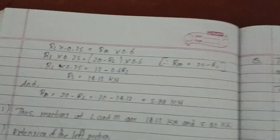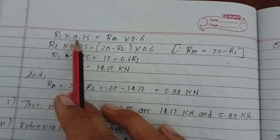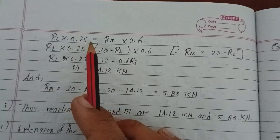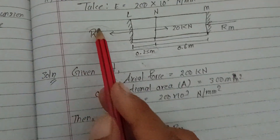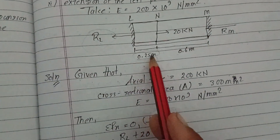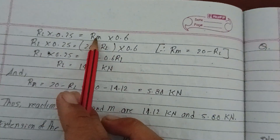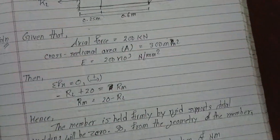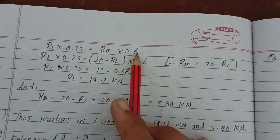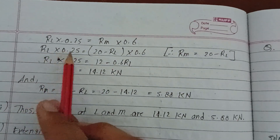Substituting: RL into 0.125 equals RM into 0.167. So RL into 0.125 equals RM into 0.167. We also use the equilibrium equation: RL plus RM equals 20 kilo Newtons.